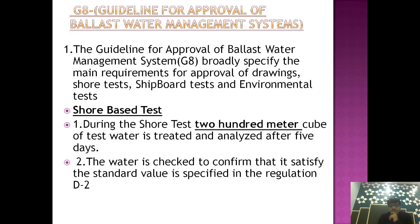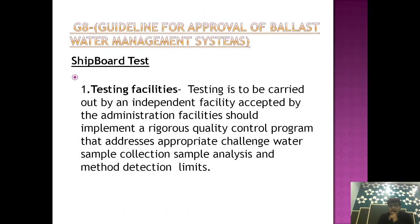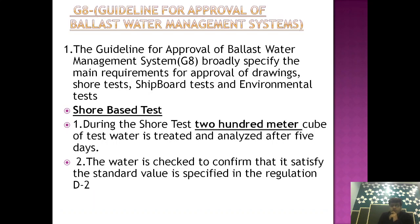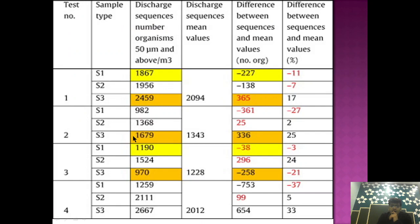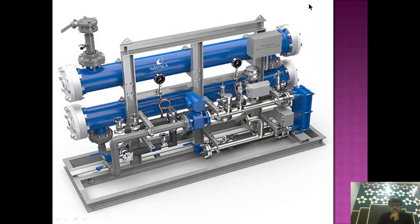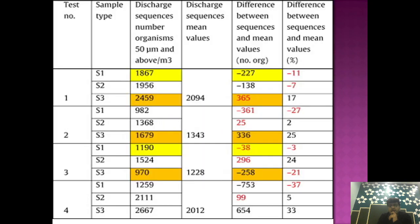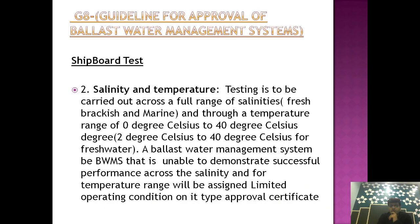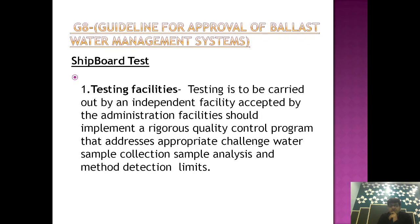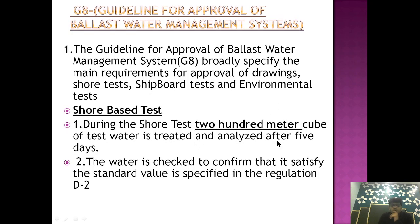So basically they are subjected to two tests. One is the shore-based test and the other is the SHIPBOARD test. In the shore-based test, suppose you have constructed a ballast water treatment system. Now you have constructed it, but how will you make sure that this system is approved by the classification society, approved by the IMO, and is okay to use on board ship? G8 states that if you have made a new system, to get type approval for mass production you need to undergo these tests and prove that your system is efficient.